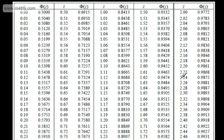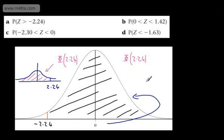So let's find that value. So here are our tables. 2.24 is just here. So what have we got? 0.9875. So let's put that on. 0.9875. So the probability that Z is greater than negative 2.24 is 0.9875.